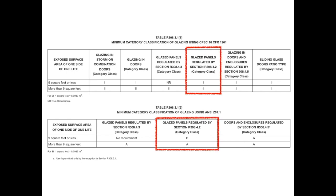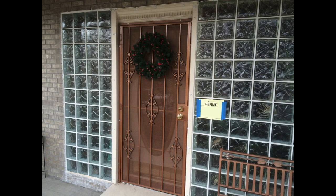This hazardous location is not in the federal standard, so either standard can be used, and there's a threshold of nine square feet for which category or class to use. Glass block is a universal exception for all hazardous locations — you're not likely to break that.